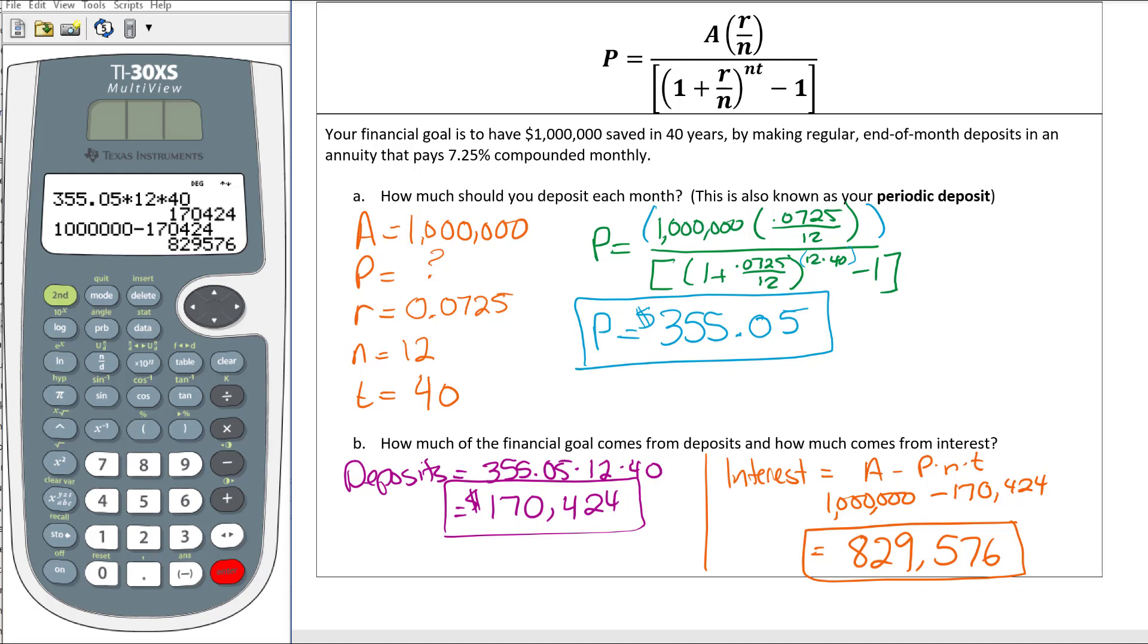You're only depositing $170,000 and you're getting $829,000 back in interest because you were letting it sit in the bank for 40 years and you continue to pay that $355 per month. This is going to conclude our lesson on annuities and saving for the future.